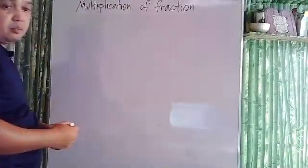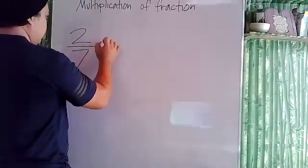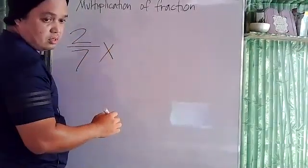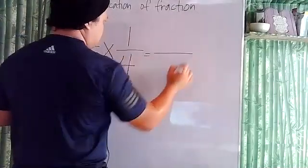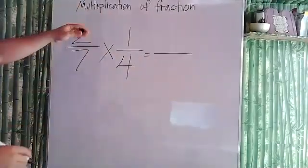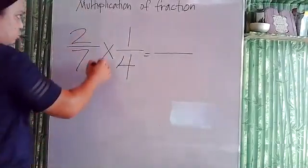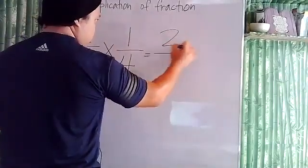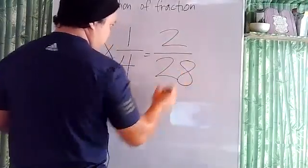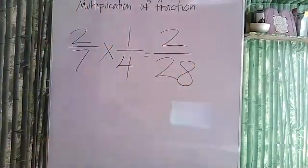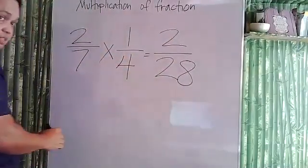Let's have example number four. Multiplying fractions: 2/7 times 1/4. Multiply the numerator and multiply the denominator. 2 times 1 is 2, while 7 times 4 is 28.